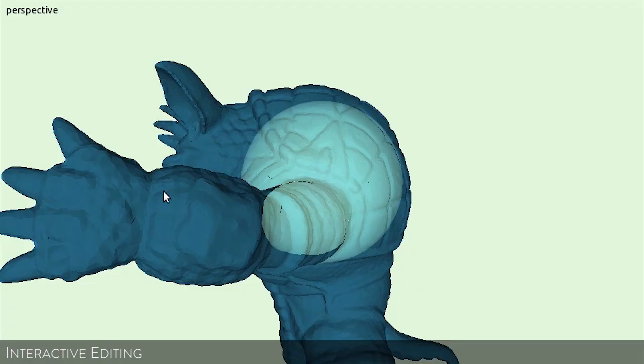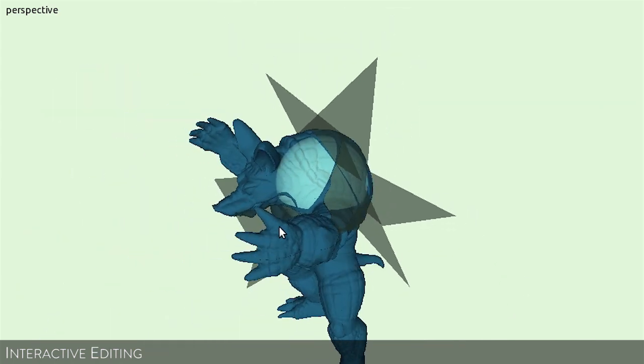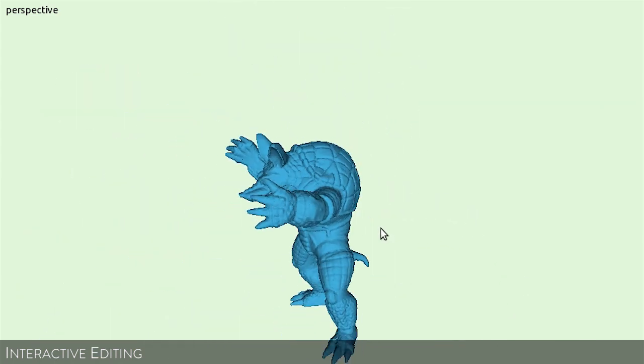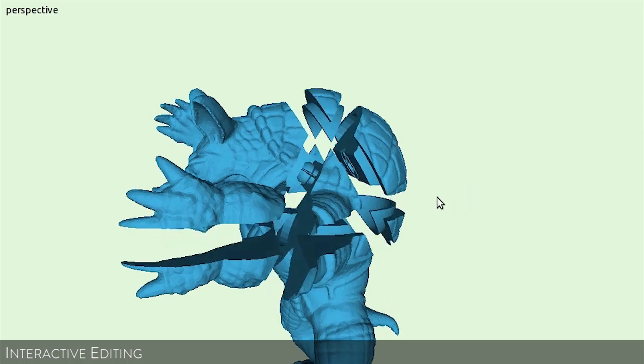We show another editing session that requires deformation. Once the pieces have been generated, the algorithm detects the collision and deforms one of the pieces to resolve it. The final set of pieces are collision-free.